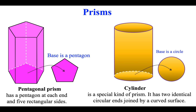A cylinder is a special kind of prism. It has two identical circular ends joined by a curved surface.